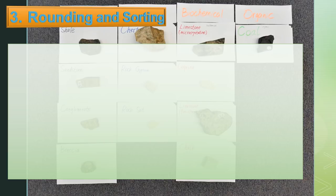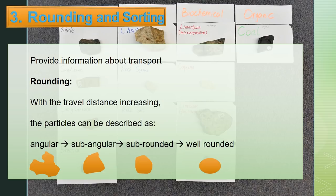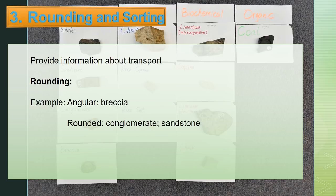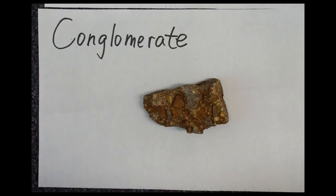Rounding and sorting provide information about transport. Sediments that have traveled long distances have smaller grains and are more rounded. With increasing travel distance, particles can be described as angular, subangular, subrounded, and well-rounded. For example, breccia is angular while conglomerate and sandstone are rounded. See the angular particles in breccia and the rounded particles in conglomerate and sandstone.